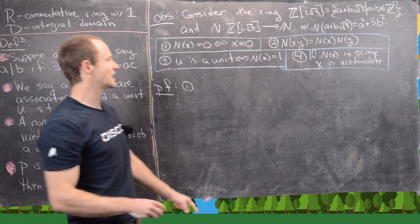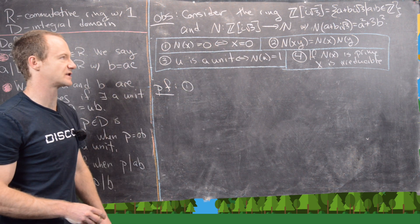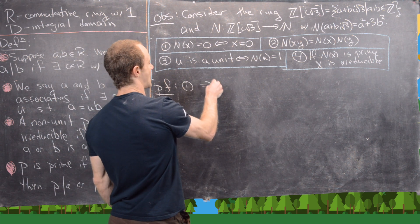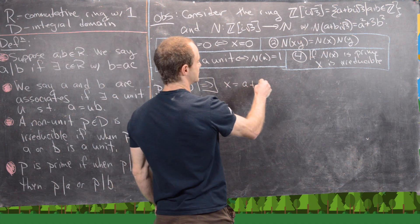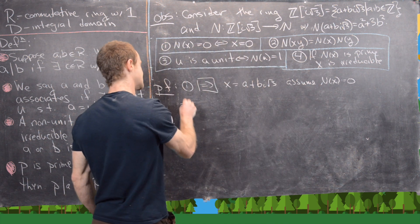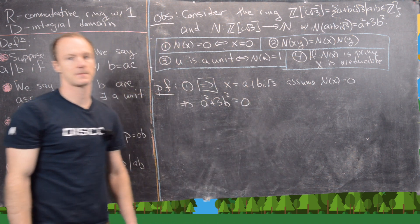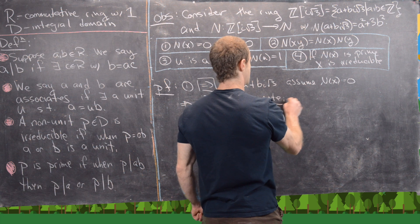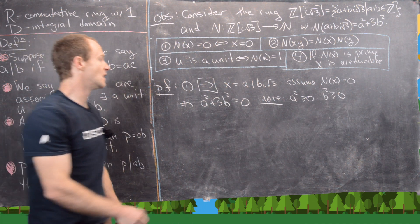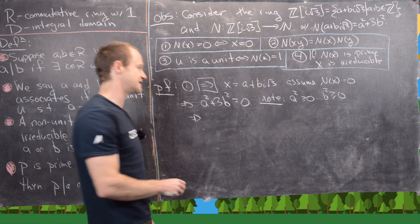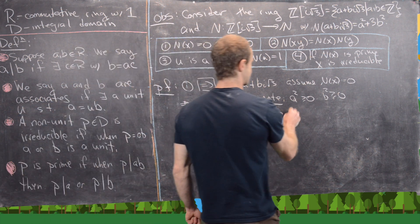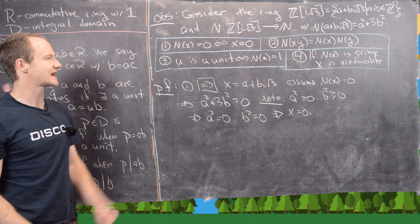For property 1, the reverse direction is trivial. For the forward direction, let x = a + bi√3 and assume N(x) = 0, so a² + 3b² = 0. Since a² ≥ 0 and b² ≥ 0 (squaring integers), the only way to sum non-negative numbers to get zero is if both are zero. So a = b = 0, which means x = 0.